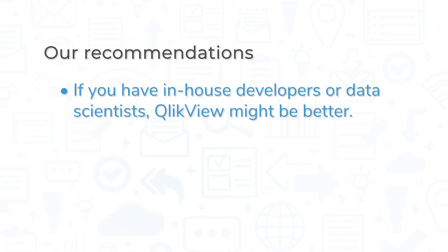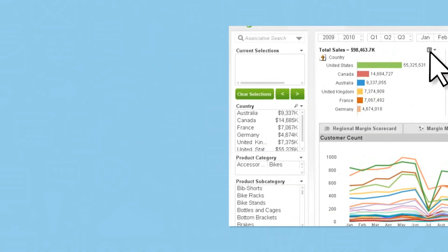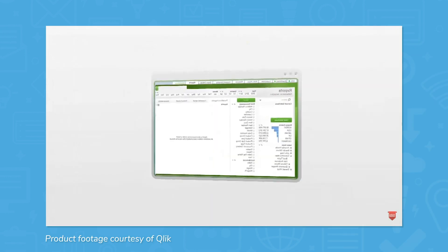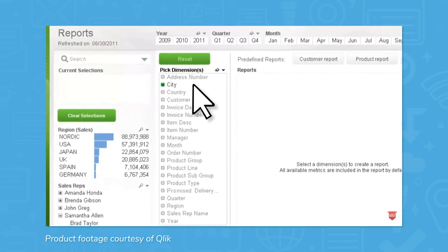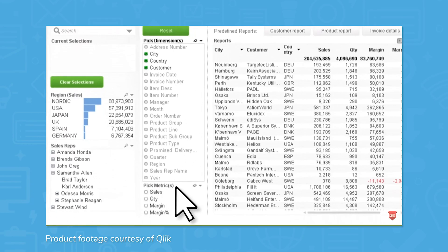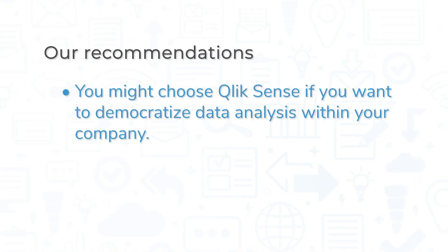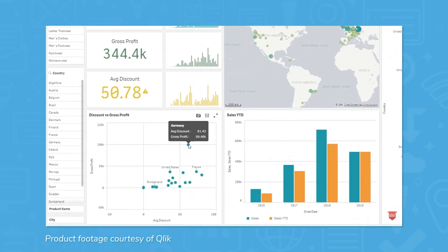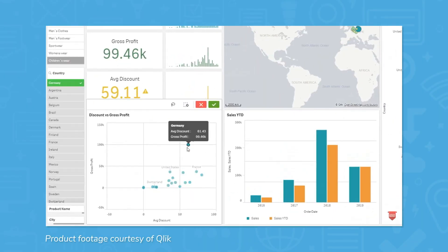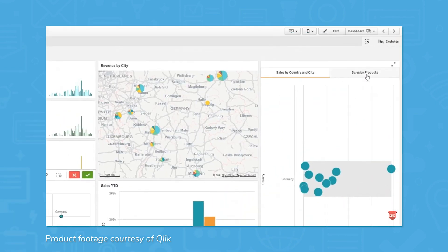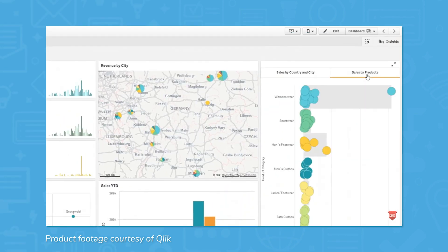If you have a dedicated team of in-house developers and data scientists, ClickView might be better for your company. This is especially true if you work with very large, complicated datasets, or if you want to specifically focus analysis on certain reports and metrics. Likewise, you might choose ClickSense if you want to democratize data analysis within your organization. ClickSense gives every contributor the power to find insights within your company data, letting anyone create charts, dashboards, visualizations, and stories.